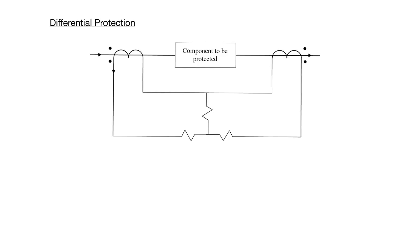In this presentation, I'm going to be introducing differential protection. The IEEE designation for differential protection is a device 87. This is called a differential relay.